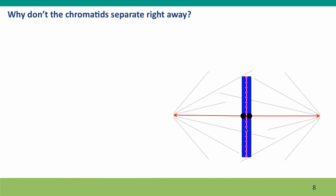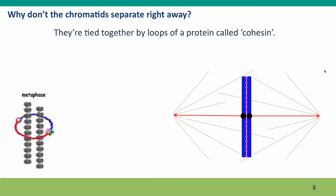But there's another question you might be asking: why don't the chromatids separate right away? If you watch those videos, you'll see that this tug of war goes on for quite a while, and it's only at the end that all the chromatids come apart at once. Why don't they separate as soon as the spindle fibers pull on them? The answer is they can't come apart because they're tied together — tied together by loops of a protein called cohesin. These loops actually wrap around the DNA double helices, tying the two sister chromatids together.